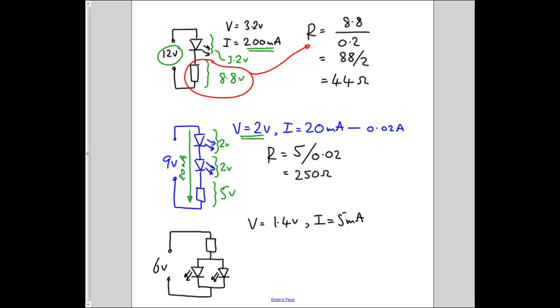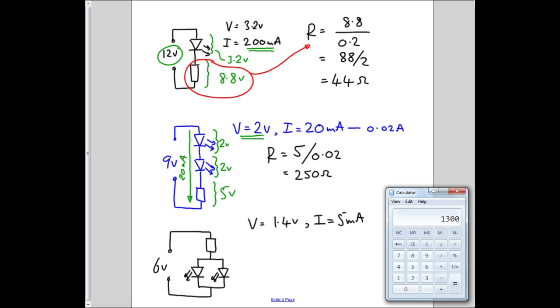If you don't believe me, we can just check that. So we do 5 divided by 0.02 equals 250 ohms. Yay!